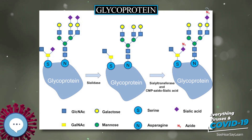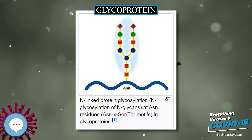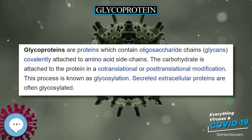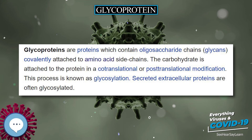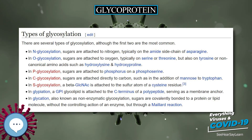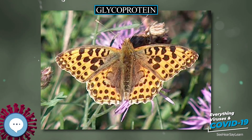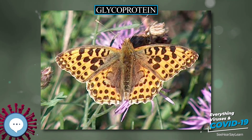Glycoproteins are important for white blood cell recognition. Examples of glycoproteins in the immune system include the H antigen of the ABO blood compatibility antigens. Other examples include soluble glycoproteins, which often show high viscosity — for example in egg white and blood plasma. Variable surface glycoproteins allow the sleeping sickness Trypanosoma parasite to escape the immune response of the host.